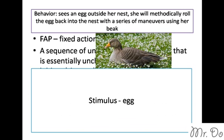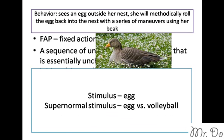For the gray lag goose, the stimulus is the egg. Another type of stimulus is called a supernormal stimulus. Scientists used the gray lag goose and presented her with an egg versus a volleyball. It turns out the gray lag goose would choose the volleyball over the egg. The volleyball in this case is the supernormal stimulus — it elicits a stronger response than the normal stimulus, which would be the egg.